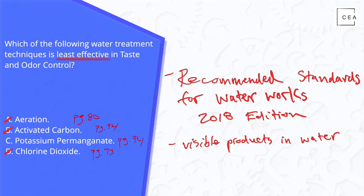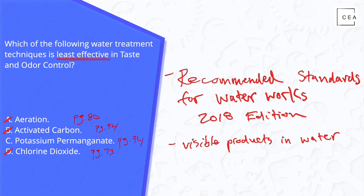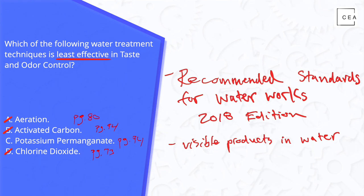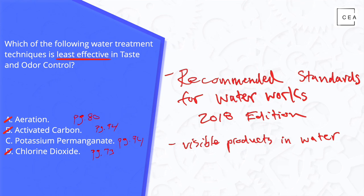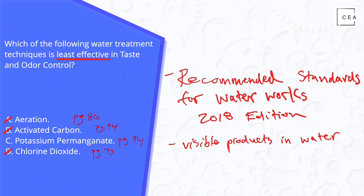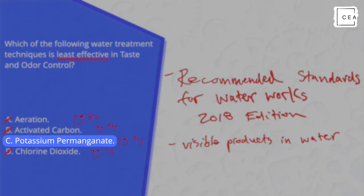Given my research searching each technique in the Recommended Standards for Water Works document, what stands out is that potassium permanganate leaves visible products in the water. This would not be desirable since drinking water is delivered to residents' homes and businesses — people do not want to see visible reaction products in water they drink, wash dishes with, or shower in. Using good engineering judgment, potassium permanganate is our answer: choice C is the least effective water treatment technique for controlling taste and odor.